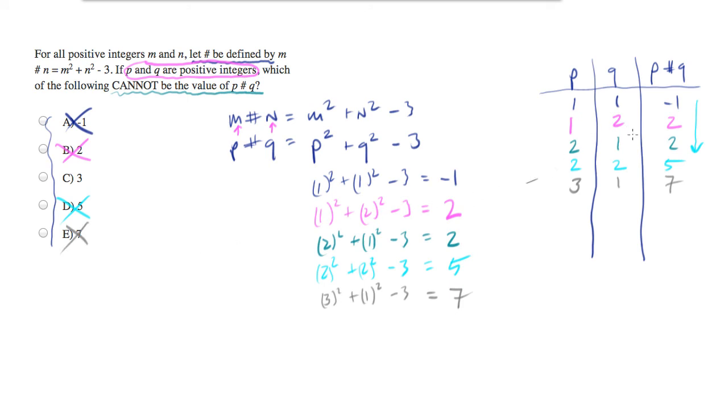And there's no magic to the numbers that I'm picking. I'm simply picking the combinations of the smallest integers that I can. And we end up with three is the only one we were not able to generate.